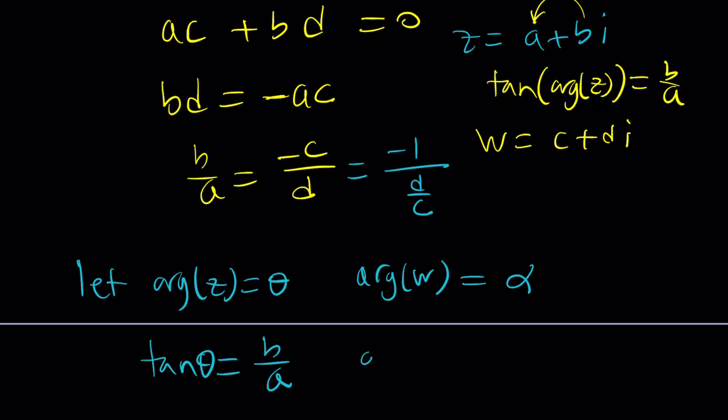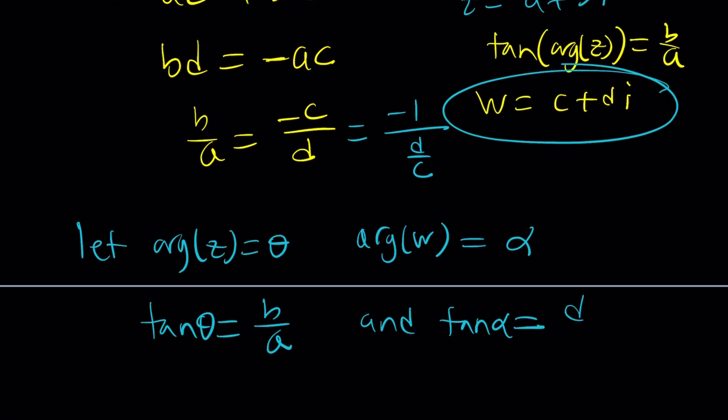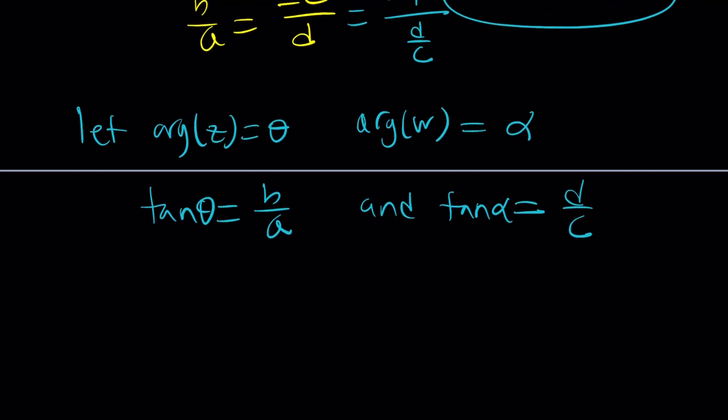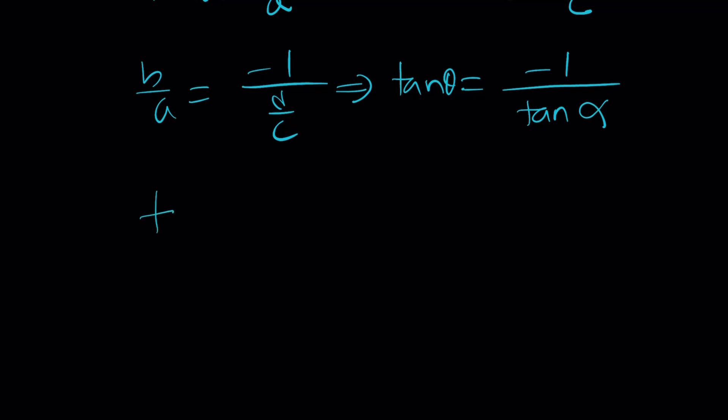So what does this give us? We had b over a equals negative 1 over d over c. From here, we get tangent theta equals negative 1 over tangent alpha. What is that supposed to mean? 1 over tangent alpha is cotangent alpha. So we can write this as tangent theta equals negative cotangent alpha.